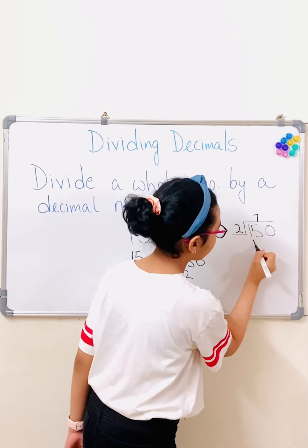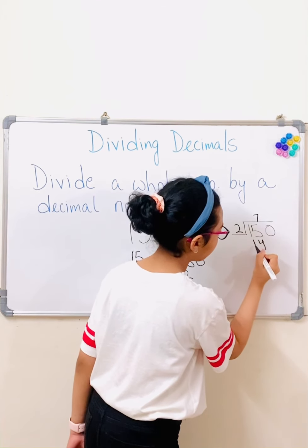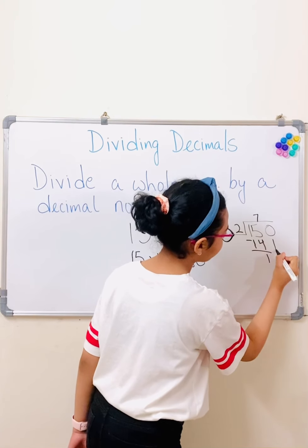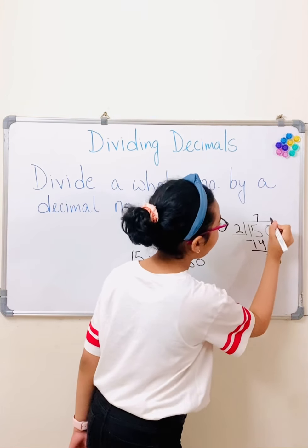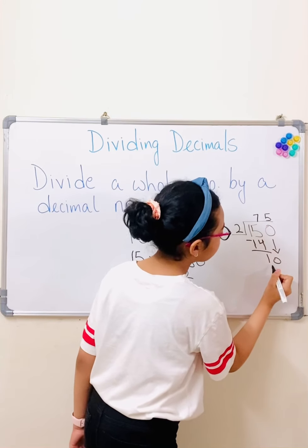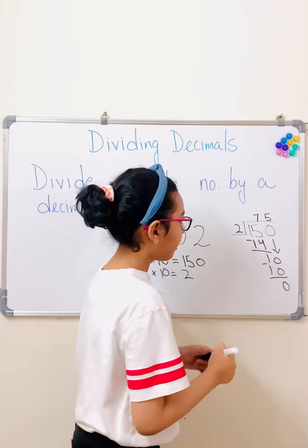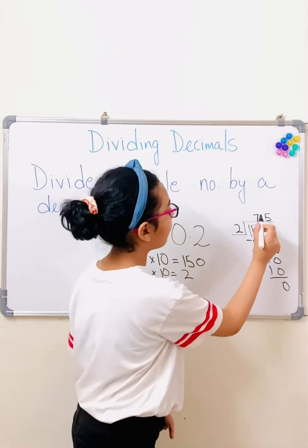Two 7s are 14. Then we get 1, bring the 0 down. And two 5s are 10. So our answer equals 2, 75.